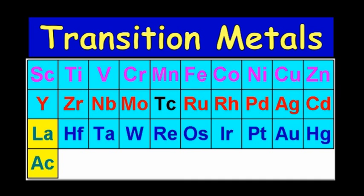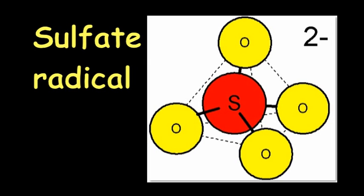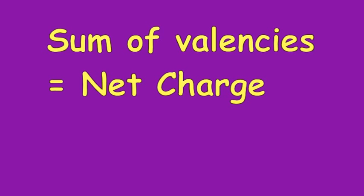Our method so far does not work for charged radicals such as the sulfate radical. Our new method is quite simple: the sum of the valences of each atom in the chemical equals its net charge. So we work out our valences using a simple equation.